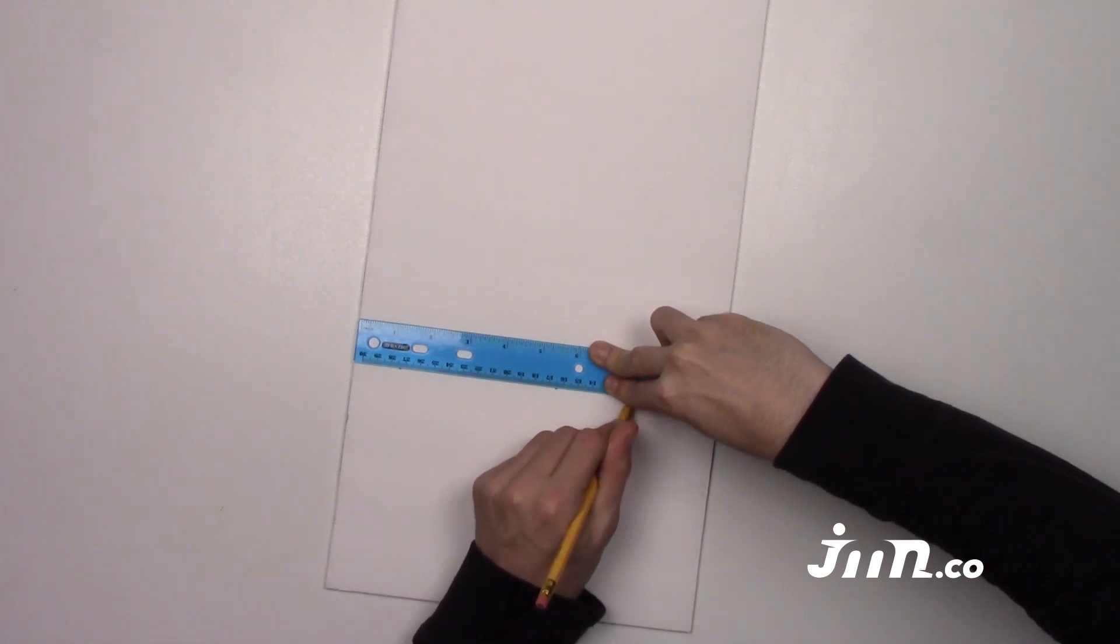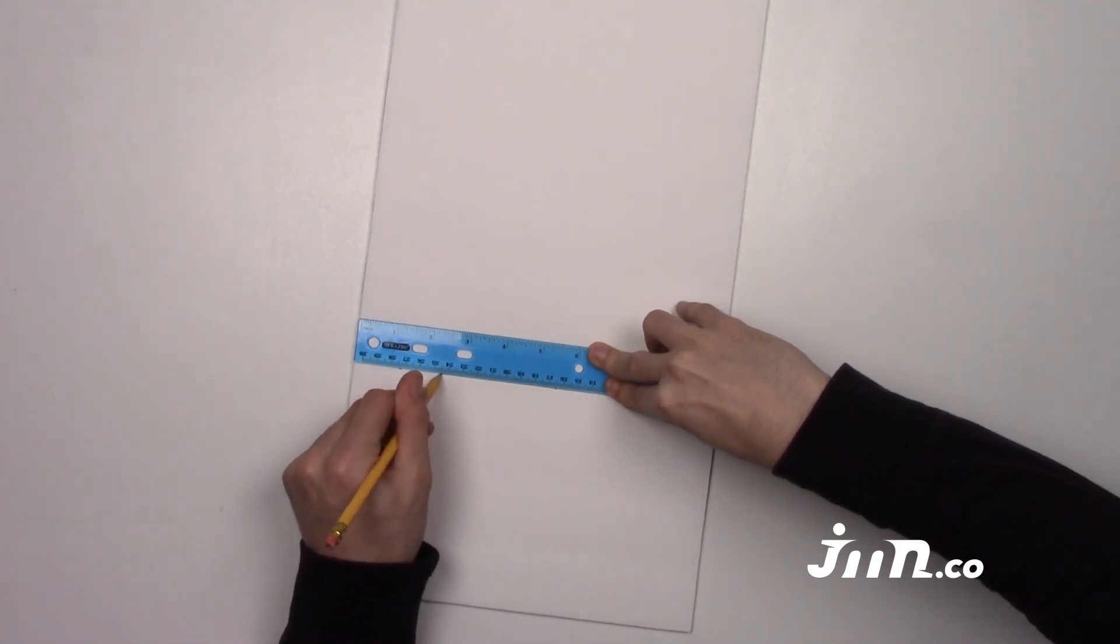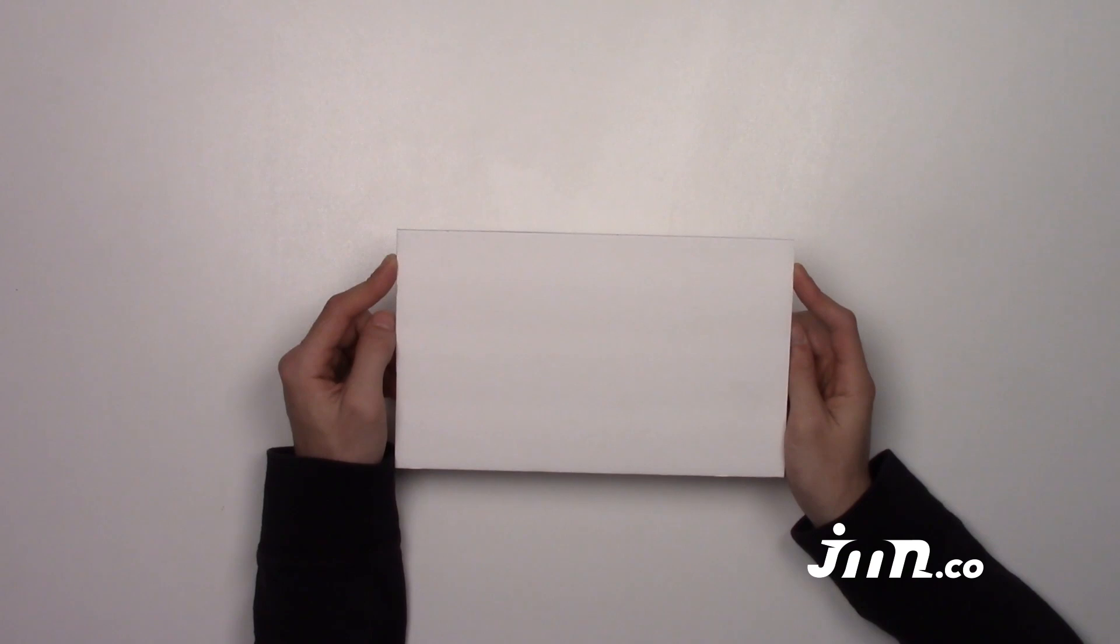Step 1: Use the pencil to mark a rectangle on the foam board. Step 2: Ask an adult to cut the foam board.